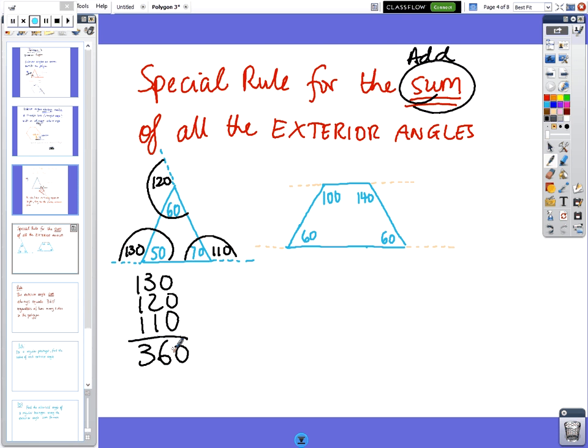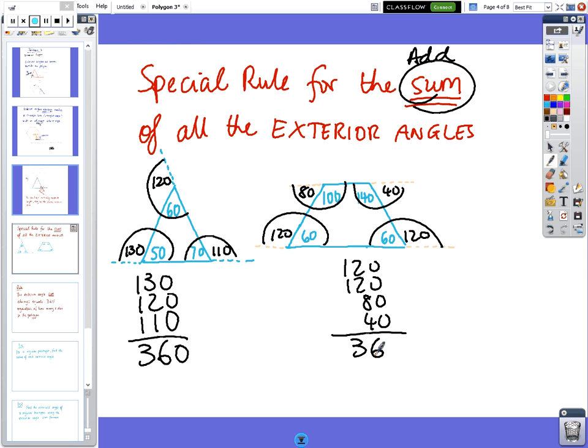So let's do the next one. That one's going to be 40, that one's going to be 80, that's going to be 120, and there's another 120. So 120, 120, 80 and 40, and you add them up, you get 360.